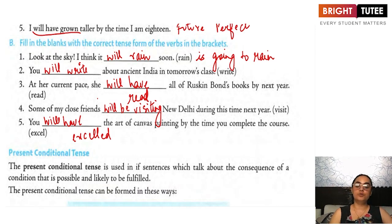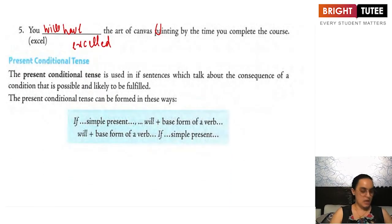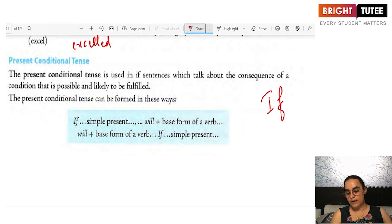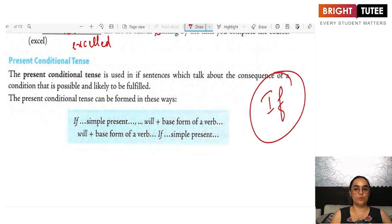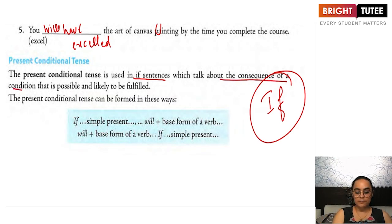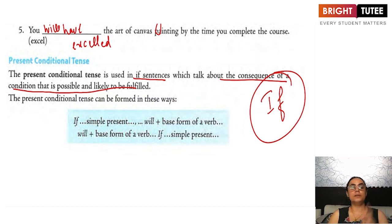That was the future tense. Now let us discuss the three types of conditional tenses: the present conditional, the hypothetical conditional, and the past conditional tense. Conditional tenses will always have 'if' in them, but the structure is different for each. The present conditional tense uses 'if' sentences to talk about the consequence of a condition that is possible and is likely to be fulfilled.